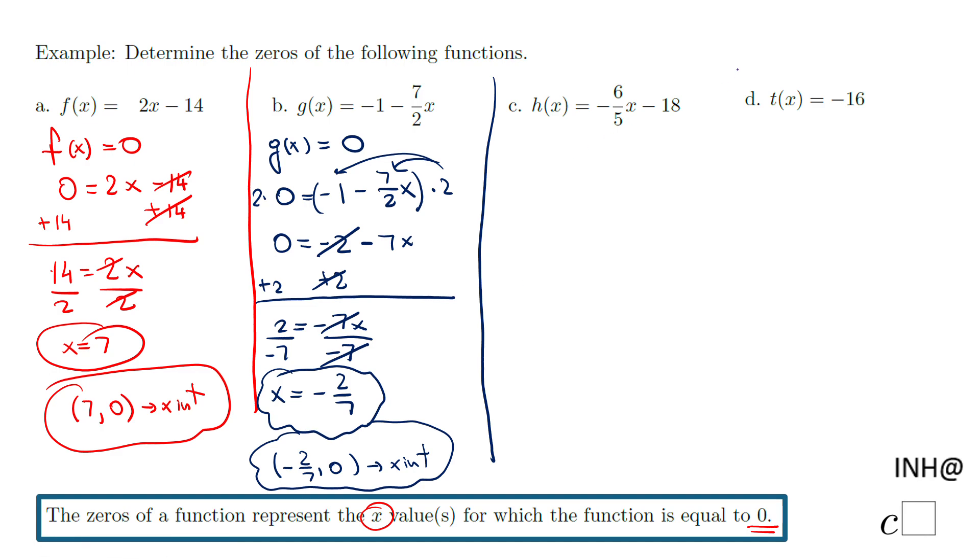Let's go to part c, where we have something very similar. Another linear function. Make the function equal to zero. And we end up with a similar equation with part b.